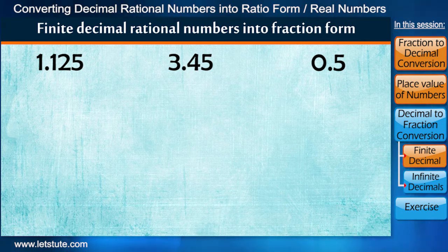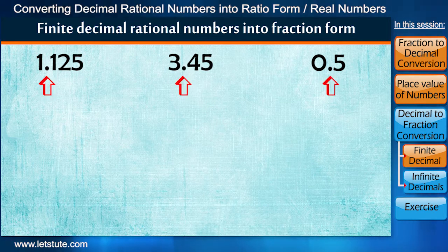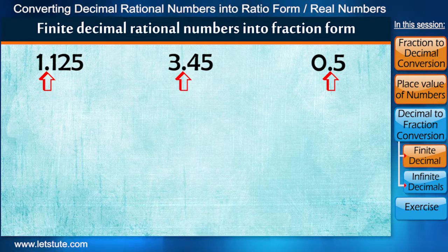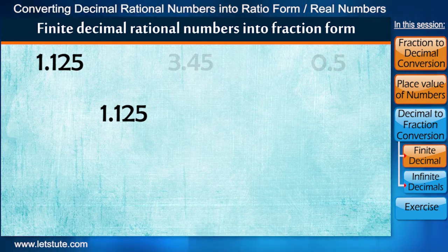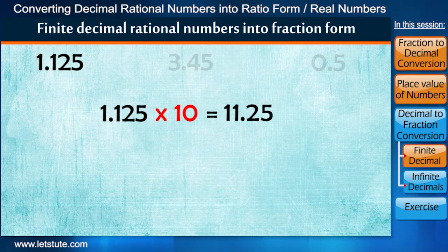To write these numbers in fraction form, our very first step is to remove the decimal point. If we talk about the first number here, as we just learned, when we multiply by 10 then one digit will shift to the left of decimal. Now we can see after decimal we still have two digits.